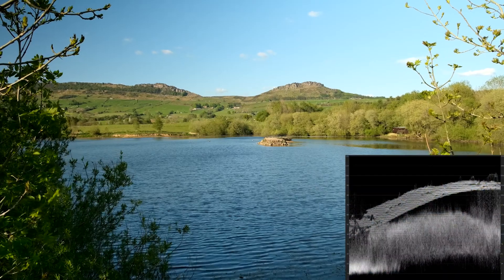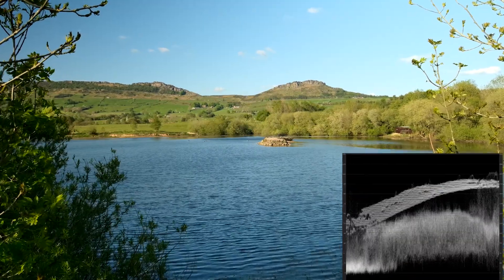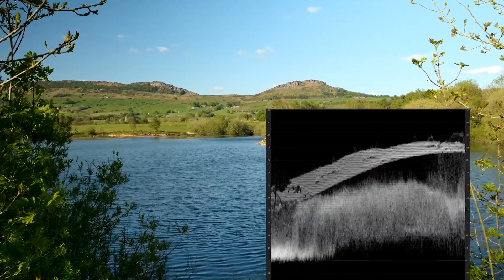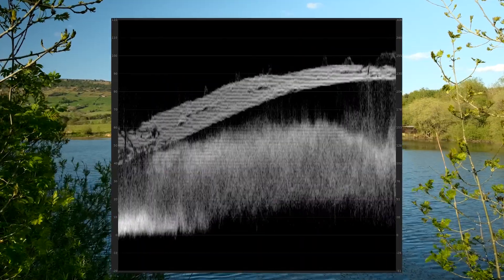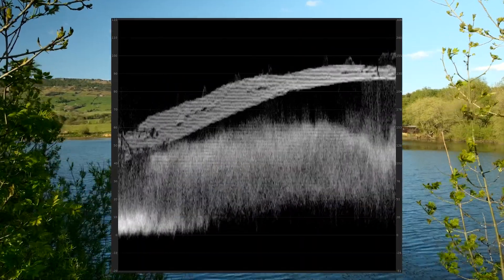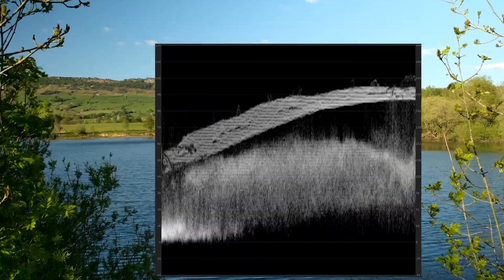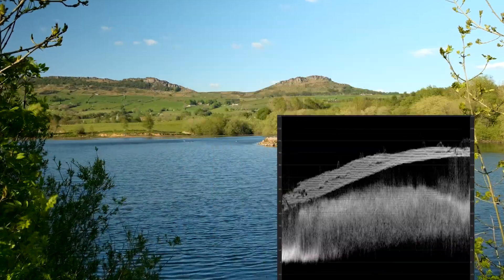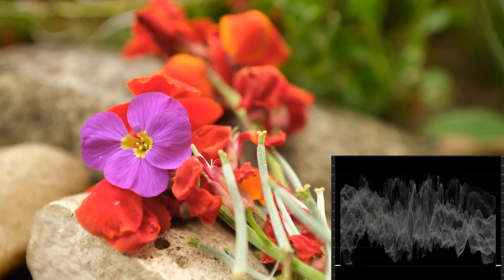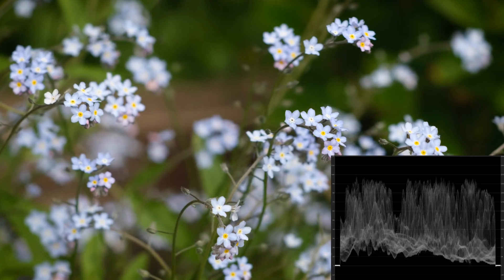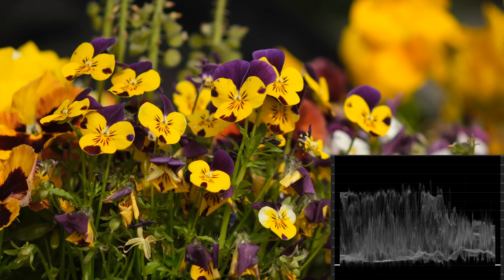In its base form, Rec.709 holds a lot of contrast and saturation. If we refer to an IRE scale, this is because the gamma curve stretches its brightness values, bringing shadows closer towards zero and highlights further towards 100. For environments which are evenly lit, this produces a pleasing image straight out of the box and requires minimal colour correction.